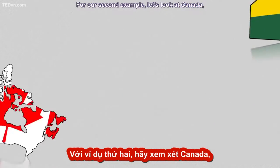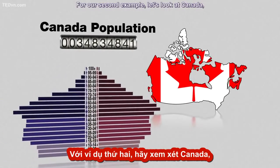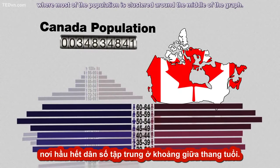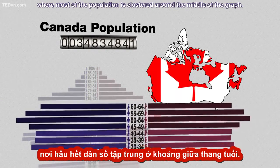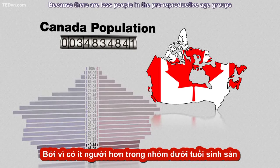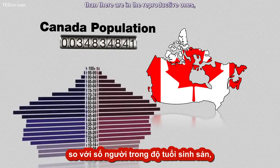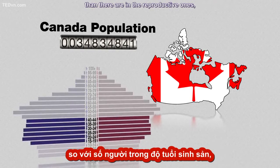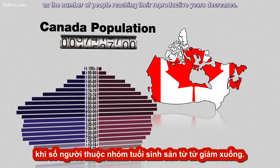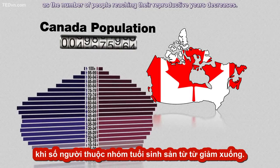For our second example, let's look at Canada, where most of the population is clustered around the middle of the graph. Because there are fewer people in the pre-reproductive age groups than there are in the reproductive ones, the population will grow more slowly, as the number of people reaching their reproductive years decreases.